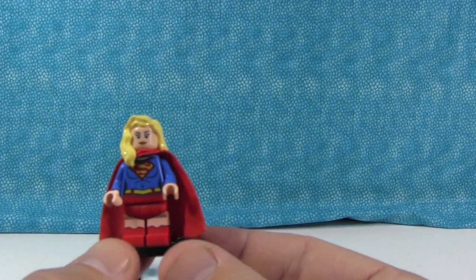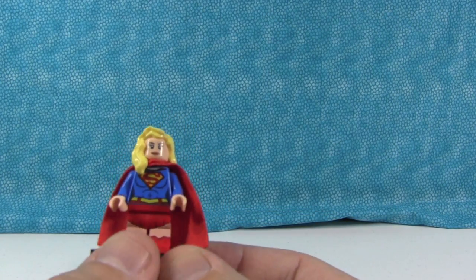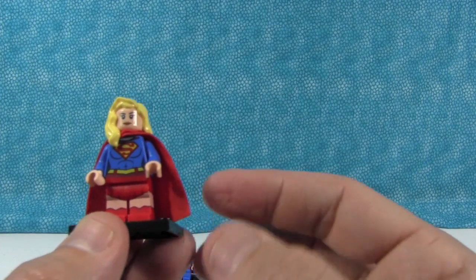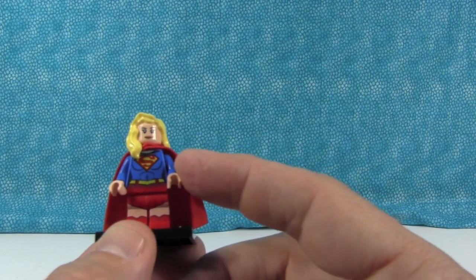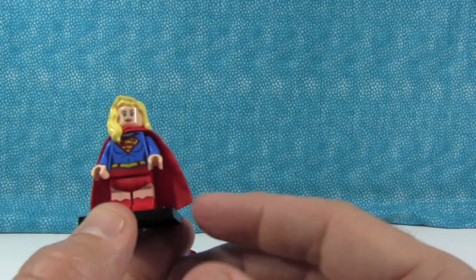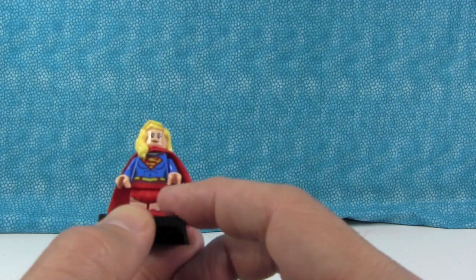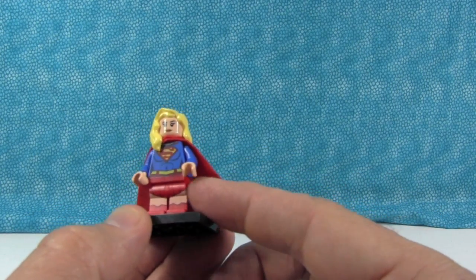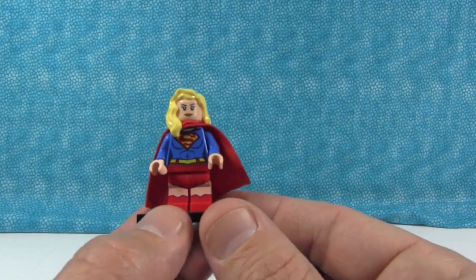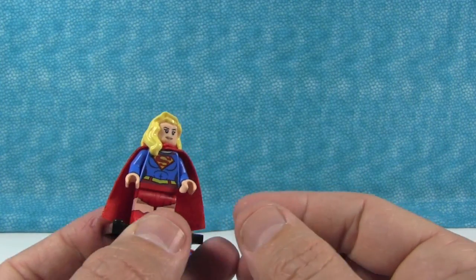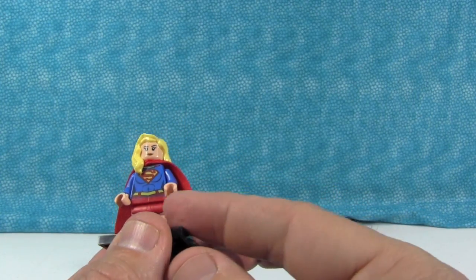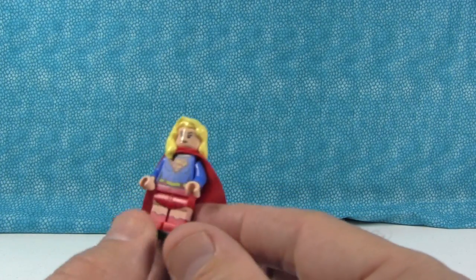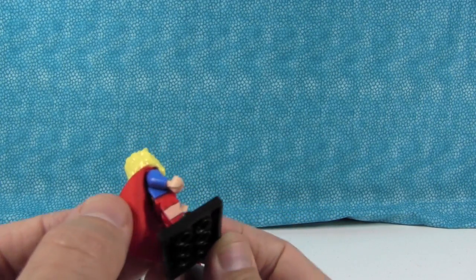All right. Let's go with the last hero in this set. This is a figure that I'm excited about. This is Supergirl. She looks really cool. She has the nice cloth cape. She has the classic, you know, bright color Superman printing. She has a printed skirt, which I like. Lego has started to include cloth skirts for, like, I saw it with the Simpsons minifigures and some of the minifigure line of figures. I'm glad they didn't do that with her. I'm glad they just printed her legs. I like that better.